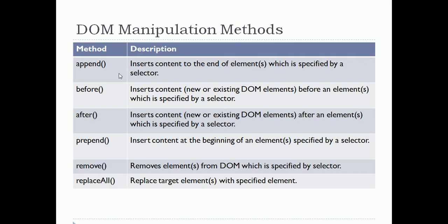For DOM manipulation, there is the append method. What it does is insert content to the end of an element specified by a selector. First you select an element — say for example you selected a table tag — and then you want to append a row to it. Append means add at the end, so that row gets added at the end of our table. Like append, there is prepend which adds the element at the beginning of your selector.